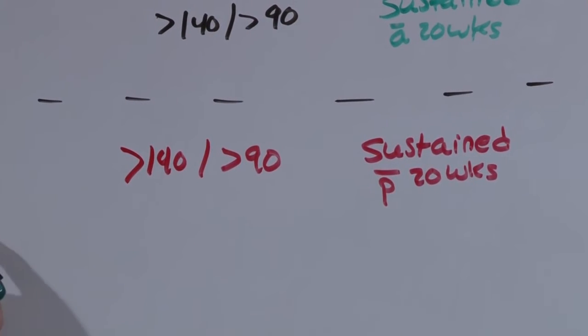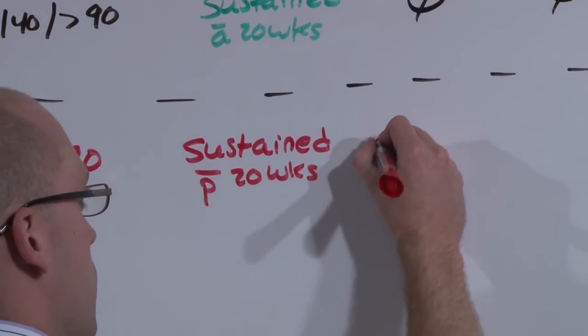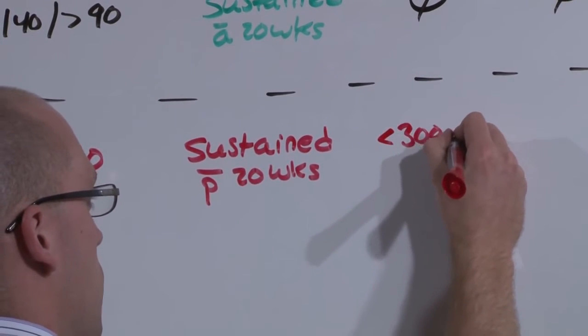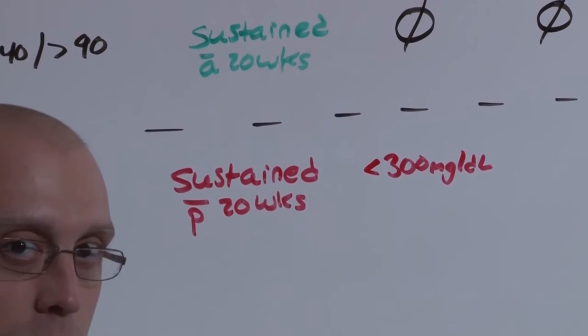Because it's only mild, the urinalysis is going to have only a little bit of protein, less than 300 milligrams per deciliter, and she won't have any of the alarm symptoms.